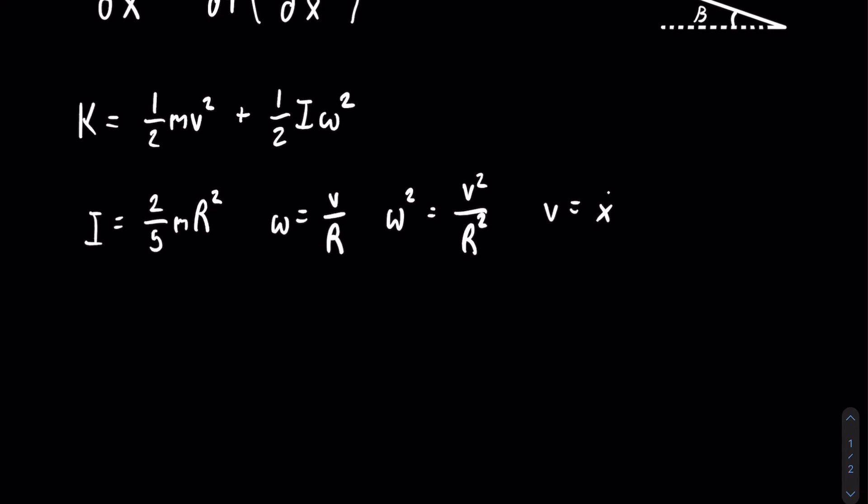So now we have everything we need to form our kinetic energy. So k is going to be equal to one-half m x dot squared plus one-half times two-fifths times m r squared times x dot squared over r squared. The r squareds will then cancel out, and we will have other simplifying that we can do. Rewriting everything, we get that k is equal to one-half m x dot squared plus one-fifths m x dot squared. And we can just add those two fractions together, and we get that is equal to seven-tenths m x dot squared.